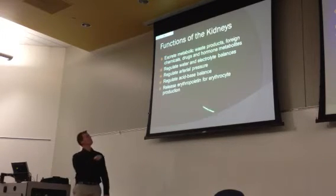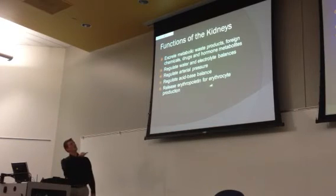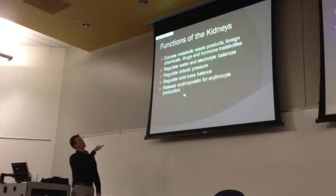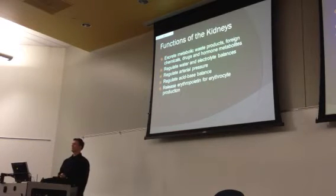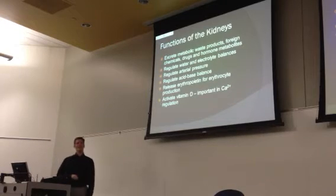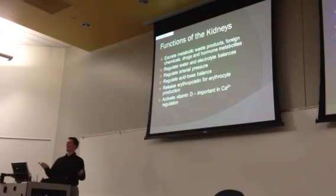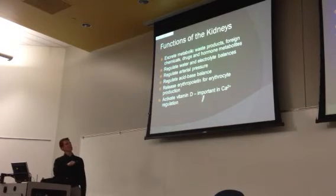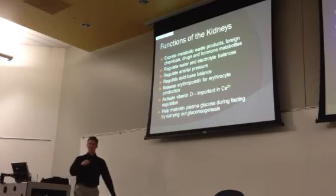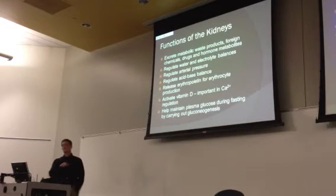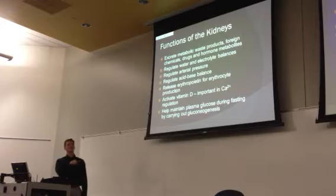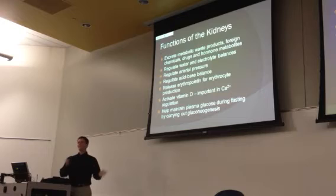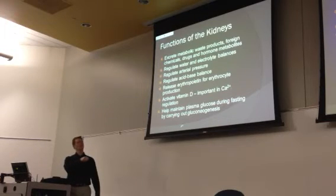Now we're going to go over some more minor functions. There's erythropoietin - this would be a hormone, and basically it's related to producing red blood cells. You also activate vitamin D with the kidney, which is important in calcium regulation. You can also control some of your glucose homeostasis - controlling some glucose during fasting through gluconeogenesis in the kidneys. That's a minor role for the kidney and a minor contribution to your glucose homeostasis.